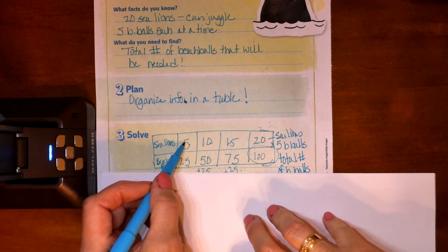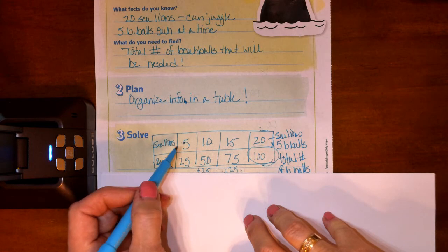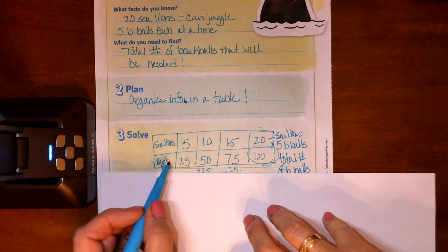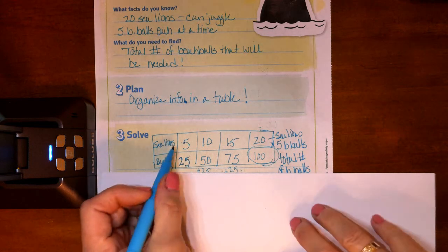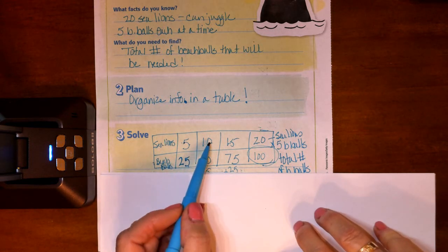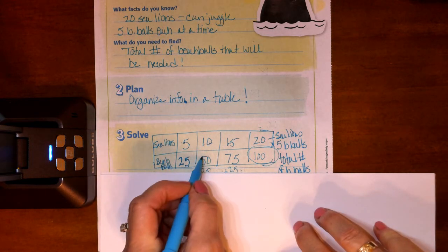So we have five sea lions. And if five sea lions can juggle five beach balls, then that's going to be a total of 25 beach balls. And so if that's the case, then if we have 10 sea lions, that means they have 50 beach balls.